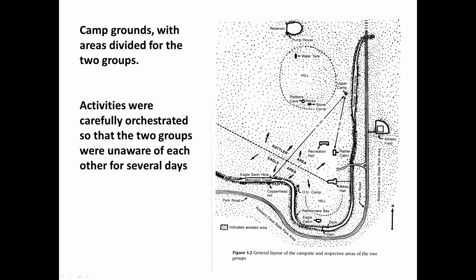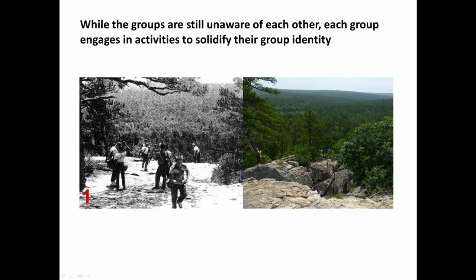Here's a schematic of the campground taken from Sharif's book, where he describes the experiment in detail. It's divided into two areas — the top side reserved for one group who called themselves the Rattlers, and the bottom half for the other group who called themselves the Eagles. The campgrounds had recreation halls, dining halls, cabins, and a lake. The terrain at this state park is fairly rocky with a variety of caves, and it's called Robber's Cave because in the 19th century, famous robbers such as Jesse James hid out there — history that would be very appealing for young adolescent boys.